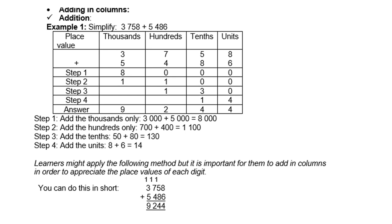Remember your place values within your number: the 3 and the 5 are thousands, the 7 and the 4 are hundreds, the 5 and the 8 are tens, and the 8 and 6 are units. Don't forget that.